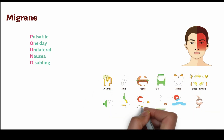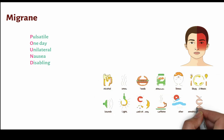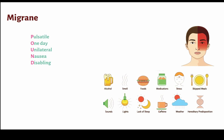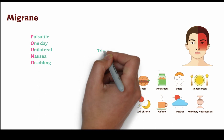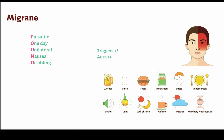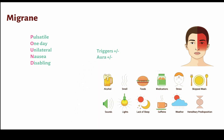Migraines have triggering factors like alcohol, smell, light, sound, food, medications, stress, caffeine, weather, or lack of sleep. There can be aura present or absent.